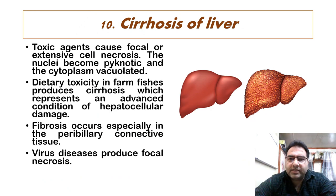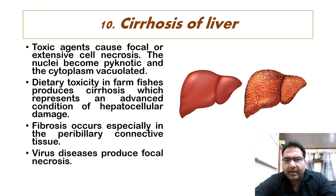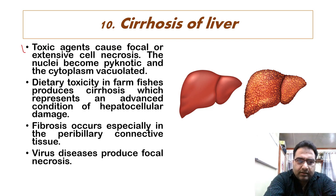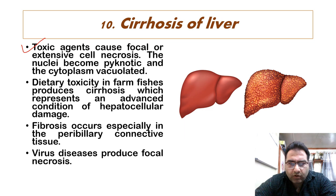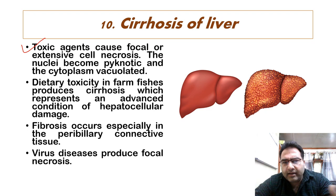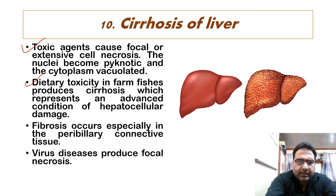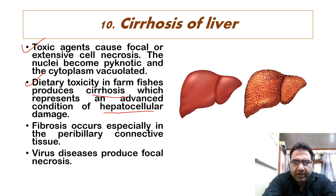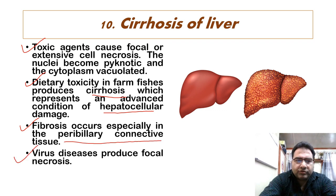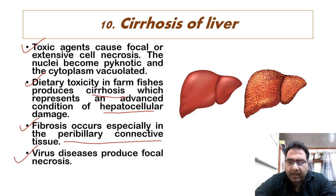Cirrhosis of the liver is another important pathological condition, caused by toxic agents which cause focal or extensive necrosis. The nuclei become pycnotic and the cytoplasm becomes vacuolated. First there is a fatty liver condition which then turns necrotic. Dietary toxicity in farmed fishes produces cirrhosis, representing an advanced condition of hepatocellular damage. Fibrosis occurs especially in the peribilliary connective tissue, and virus diseases produce focal necrosis wherever the virus affects.